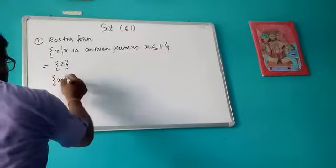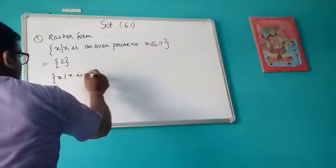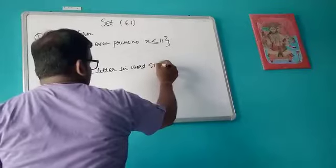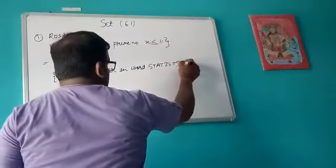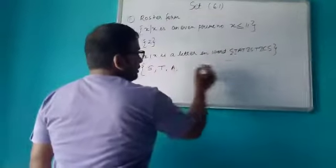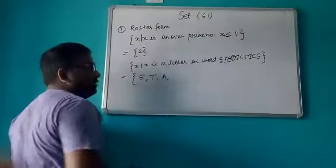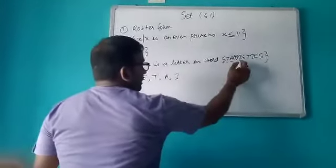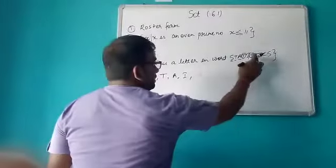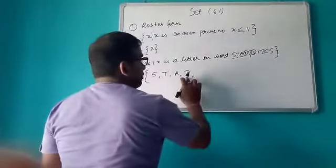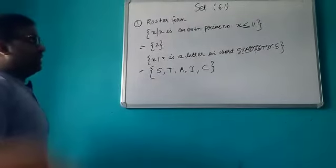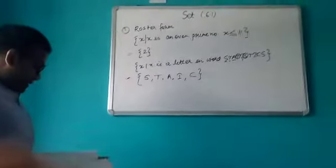Suppose another set is given where x is a letter in a word. We write the distinct letters: A, then T (counted once), then I, then S (counted once), then C. We do not write repeated elements — only the distinct elements appear in the set.